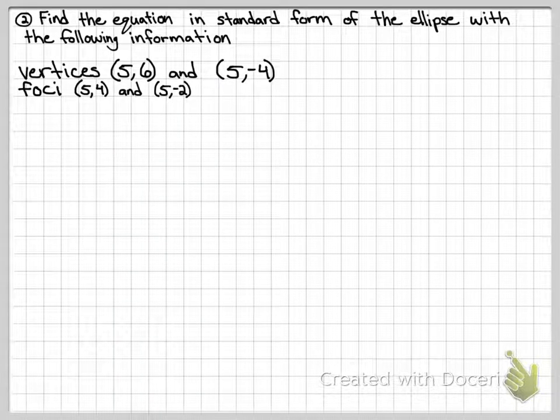Example number 2. Find the equation in standard form of the ellipse with the following information. So we're given vertices, 5, 6, 5, negative 4, and foci, 5, 4, 5, negative 2.